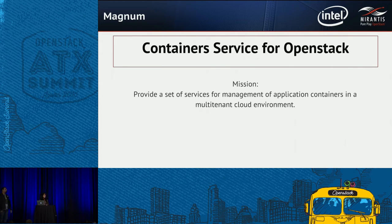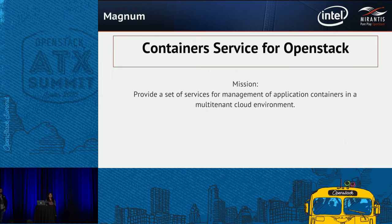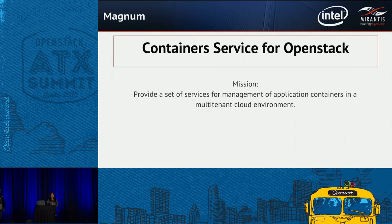Thank you, Serge, for a great introduction of Murano. Now I'll explain what Magnum is, how it works, its architecture, and its features. Magnum is the containers project for OpenStack. It provides a set of applications to manage your cloud applications on a multi-tenant OpenStack cloud. It allows different container orchestration engines — we call them COEs — like Kubernetes, Swarm, and Mesos to be available as first-class resources on OpenStack.